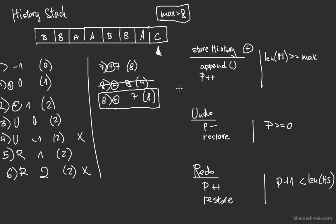Those are basically all the limits and operations we need to think about when implementing the history stack. In this part we are going to implement the history stack with all the logic and conditions we need to meet. Later in the second part we will implement all of the history stamps and detection of the correct events for storing them inside the history stack. Let's start coding.